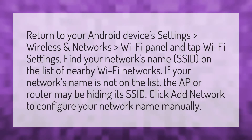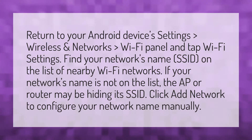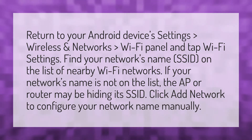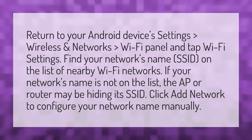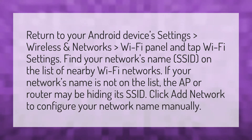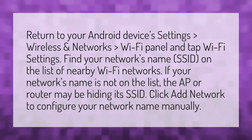Return to your Android device's Settings, go to Wireless and Networks, then the Wi-Fi panel, and tap Wi-Fi Settings. Find your network's name (SSID) on the list of nearby Wi-Fi networks. If your network's name is not on the